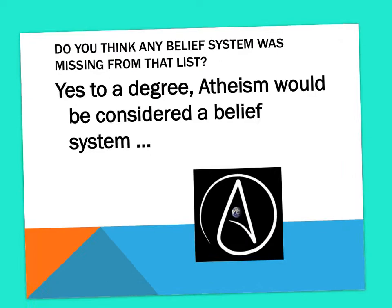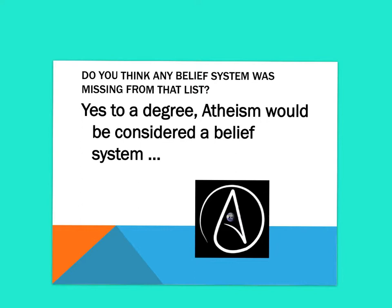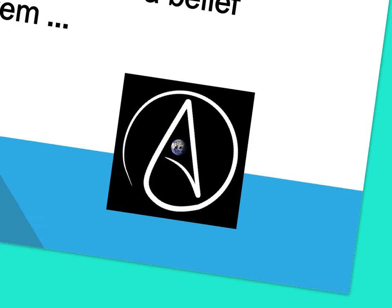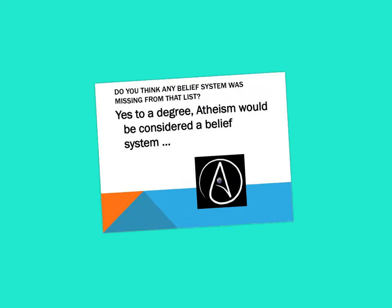In terms of belief systems, we are missing one massive one: atheism. Atheism can still be considered part of the type of religious beliefs to an extent, because it is a belief system which informs individuals how they should be acting and behaving. Obviously they disbelieve that there is a supernatural being, but as much as they might argue, it still falls within this religious belief system in terms of the definitions.